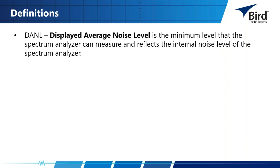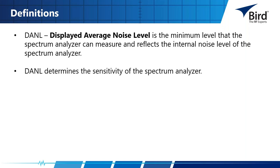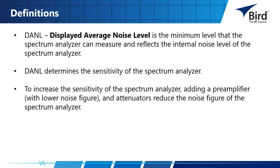DANL stands for displayed average noise level — this is the minimum level the spectrum analyzer can measure and reflects the internal noise level of the analyzer. To increase the sensitivity of the spectrum analyzer, you can add a preamp with a lower noise figure and use attenuators to reduce the noise figure. Lower resolution bandwidth leads to lower DANL.